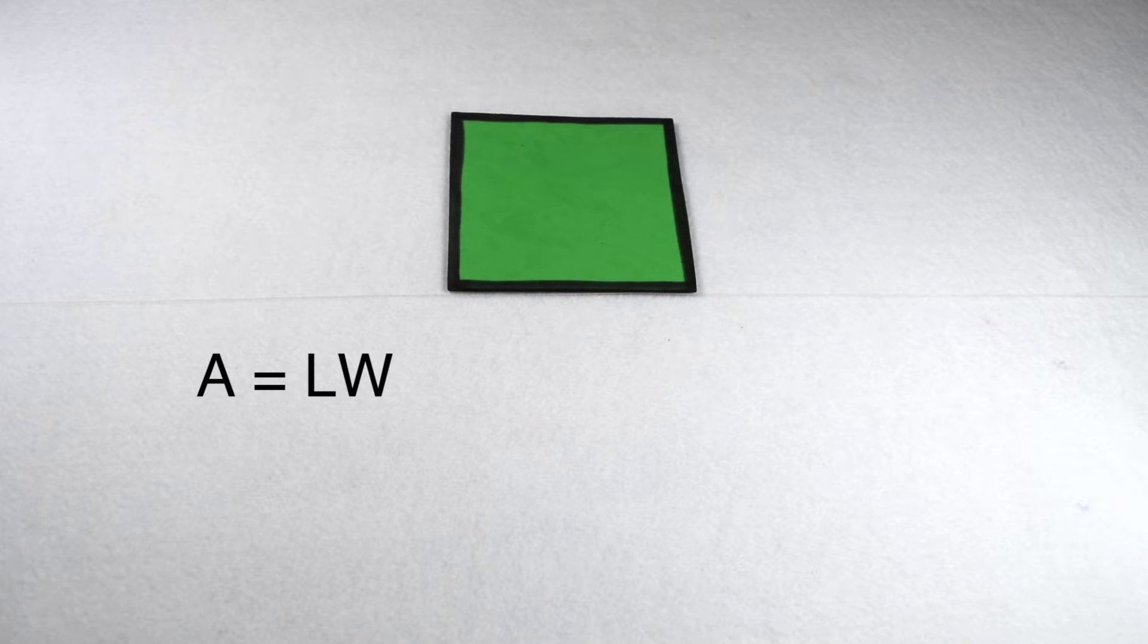However, a square is special because it has all four sides that are the same length. So we could use another equation, area equals side squared. Today we're going to look to see how these two compare.